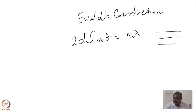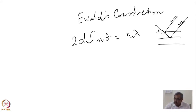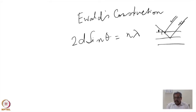Bragg's law: 2d sinθ = nλ. This is the most commonly used formula, where we assume diffracting planes. The path difference between two rays reflected from these planes is 2d sinθ, where θ is the angle of incidence. That path difference should be equal to an integer number of wavelengths λ for constructive interference.